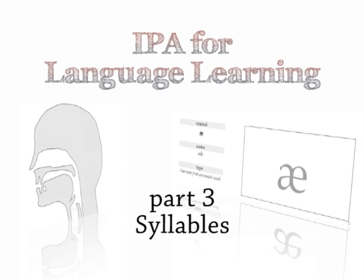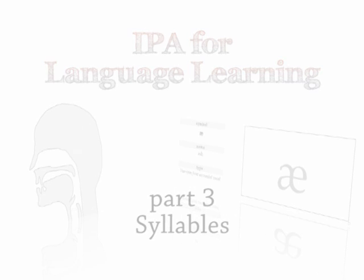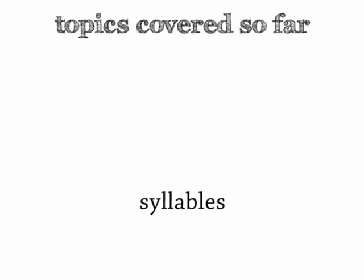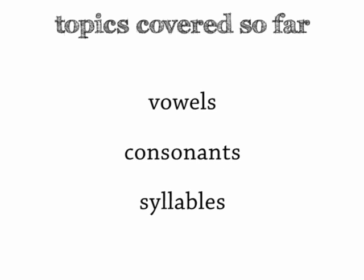Welcome to part 3 of nativelang.com's course on using the International Phonetic Alphabet to learn about pronunciation in language. This time we'll focus on syllables. The previous two videos looked at vowels and then consonants. If you grasp the basics of vowels and consonants, you already have the material you need to make a syllable.